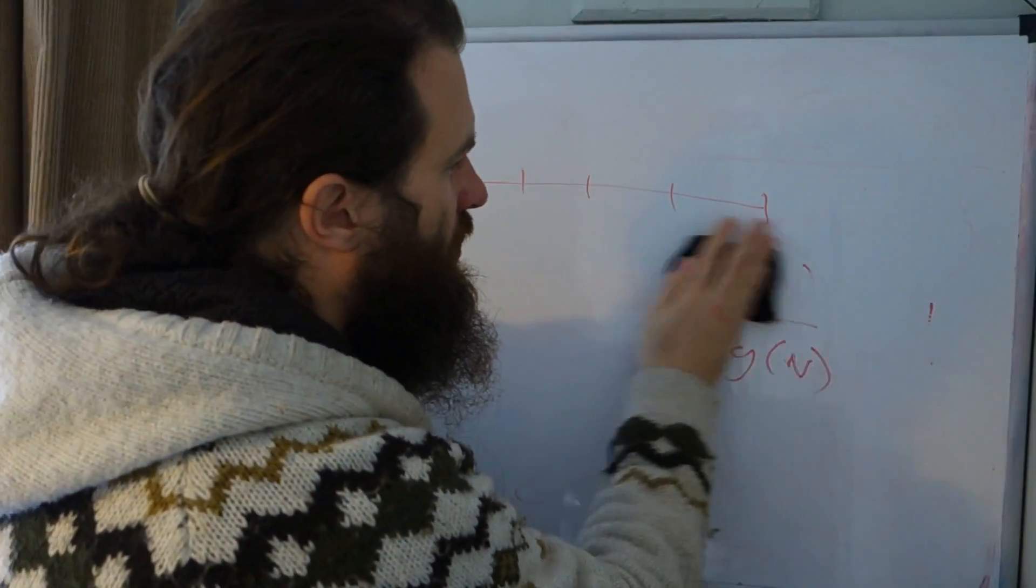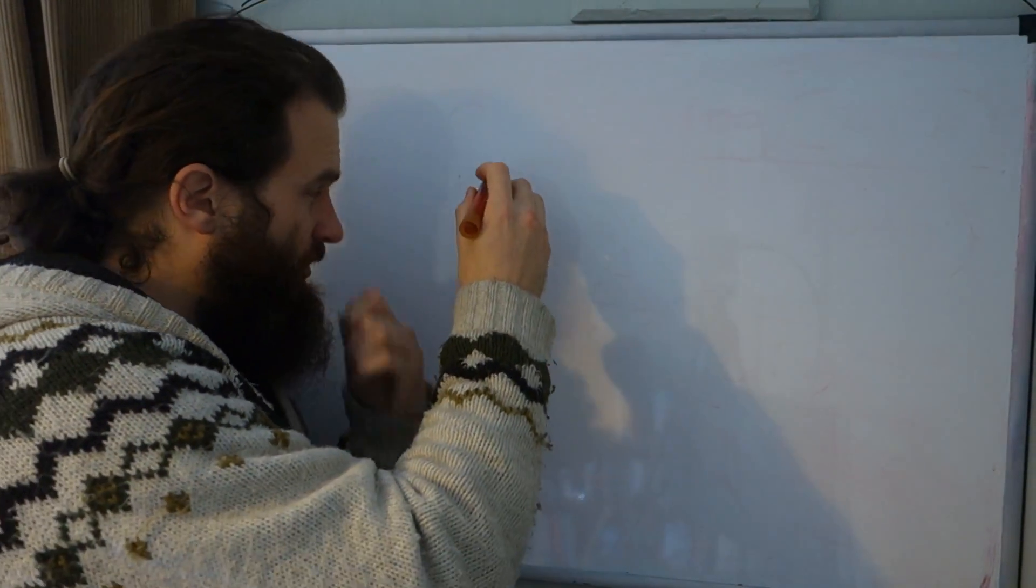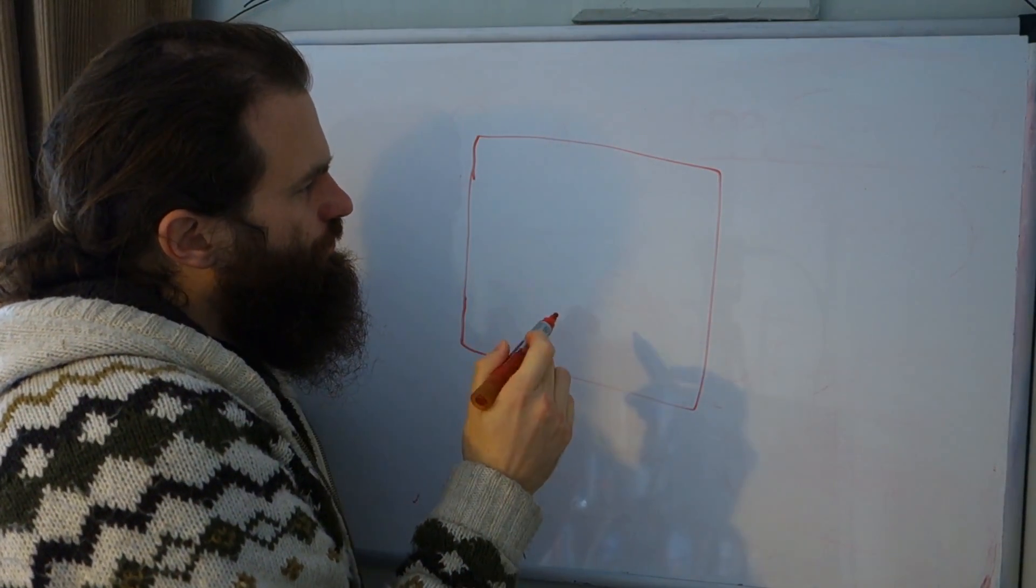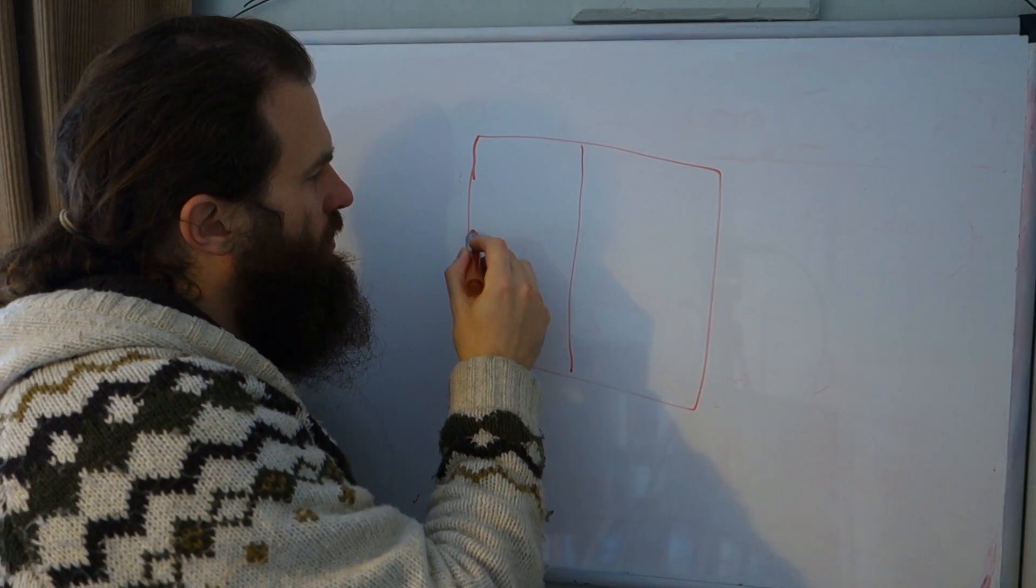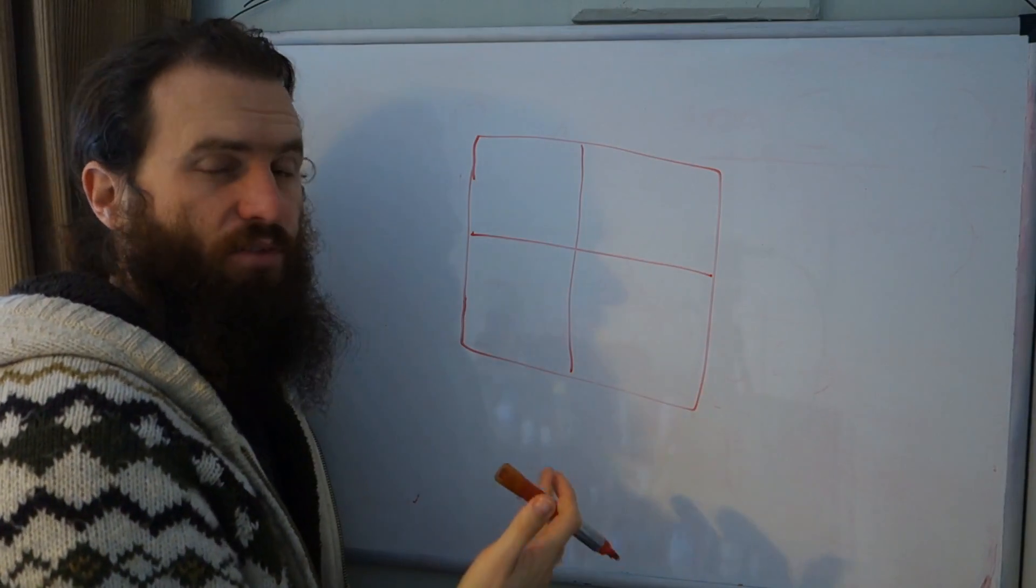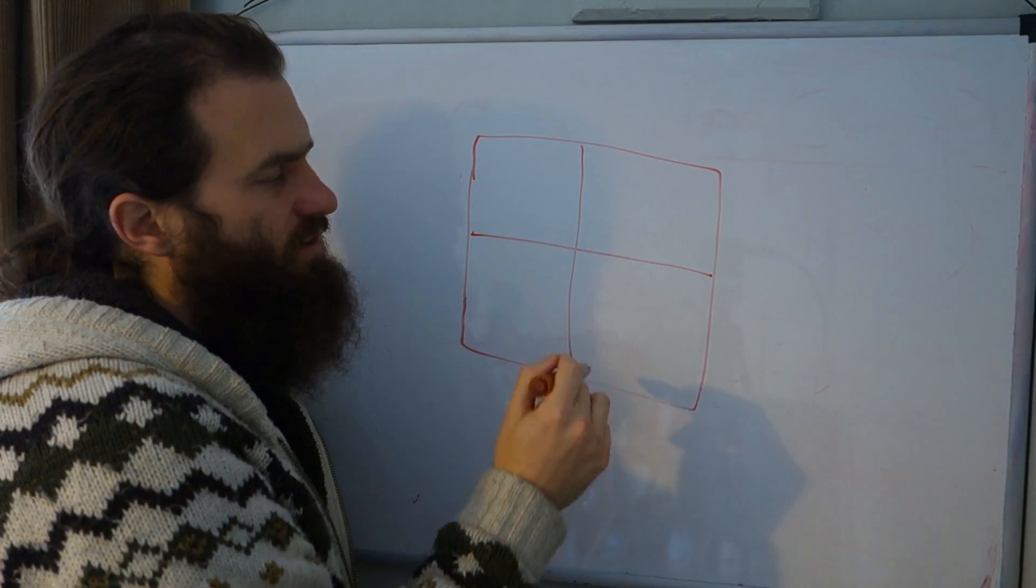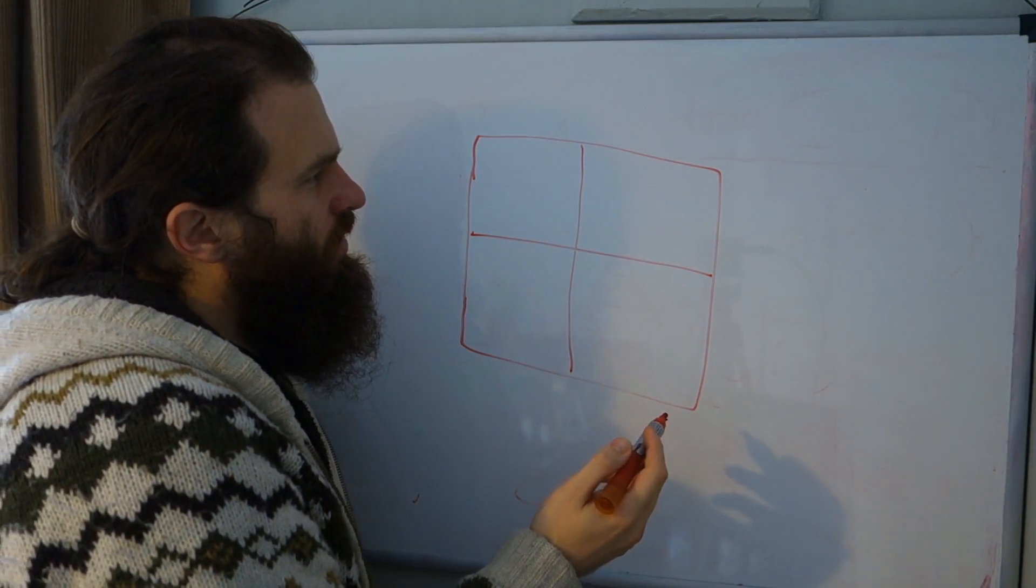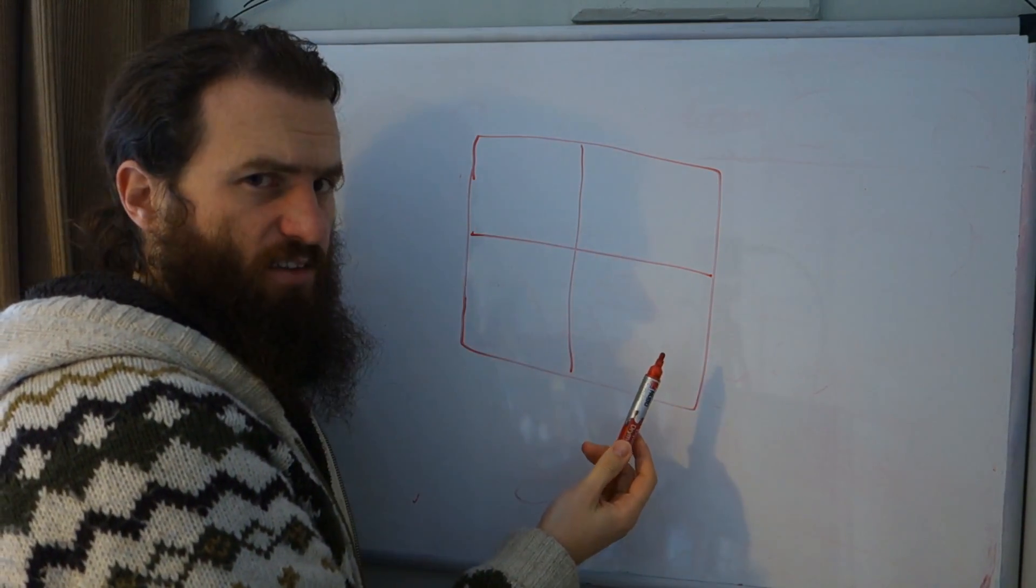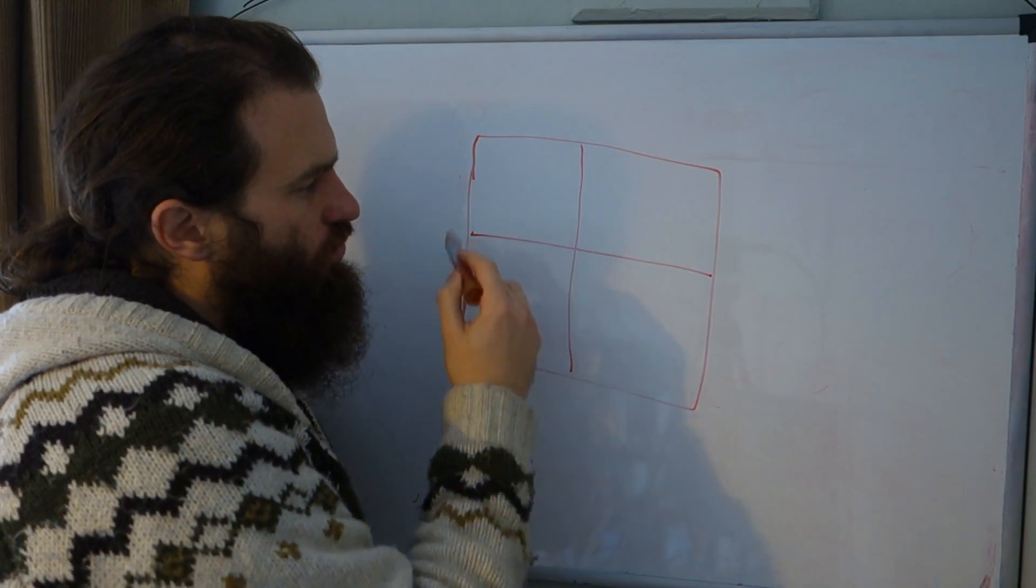So let's look at a square or a plane. If we start with a plane, and we say, all right, we'll break it into self-similar pieces. And of course, there's only certain ways we can do that. We can't split it in half. Those pieces are not self-similar. The first way we can do that is we break it into four pieces.